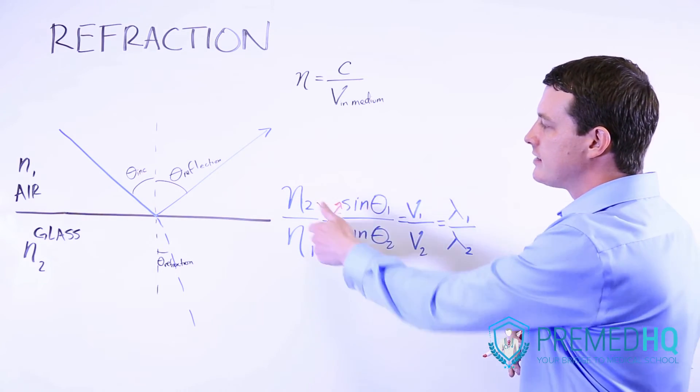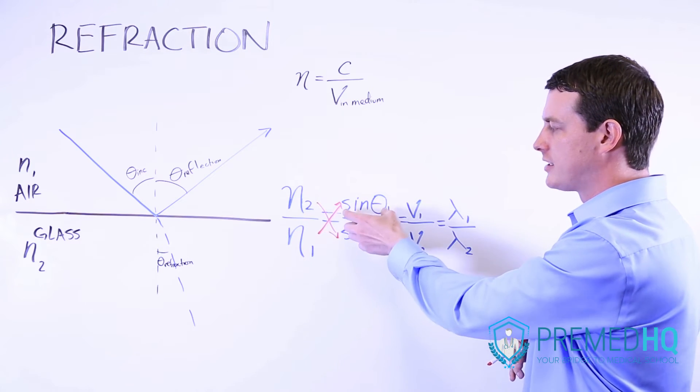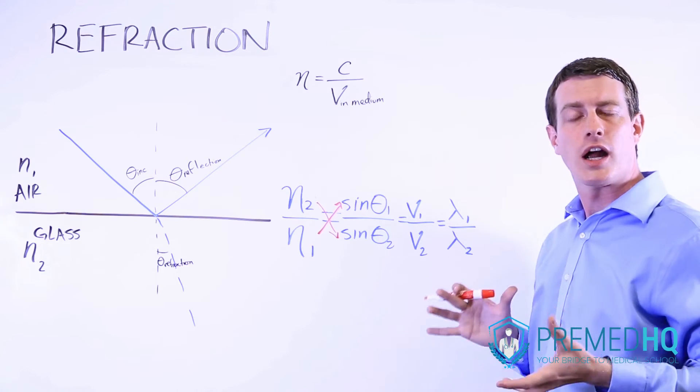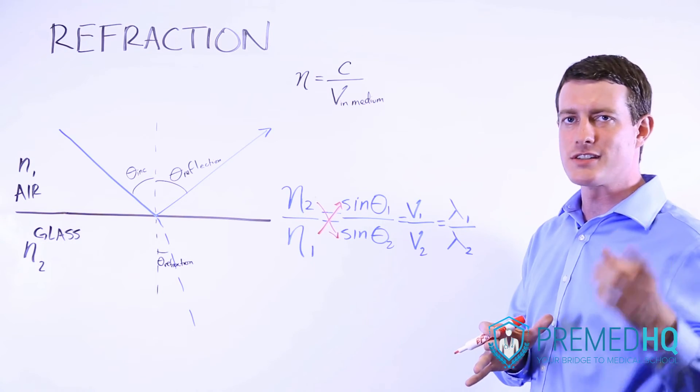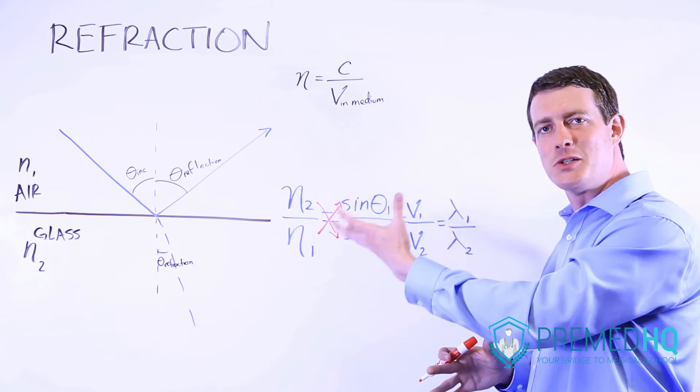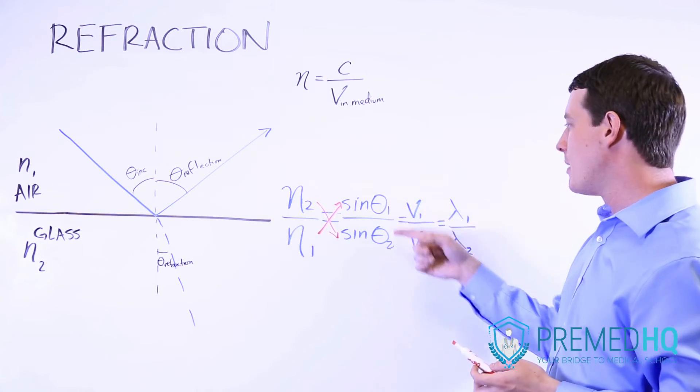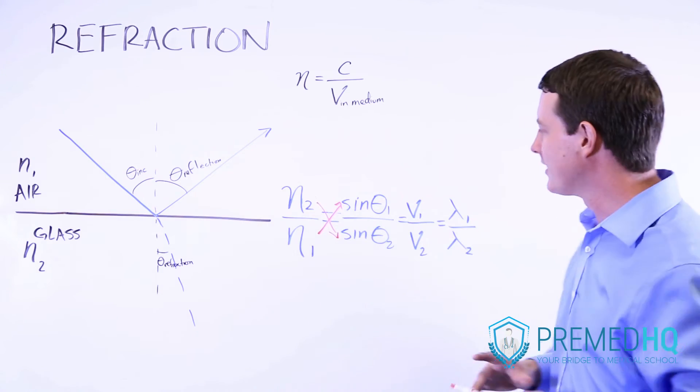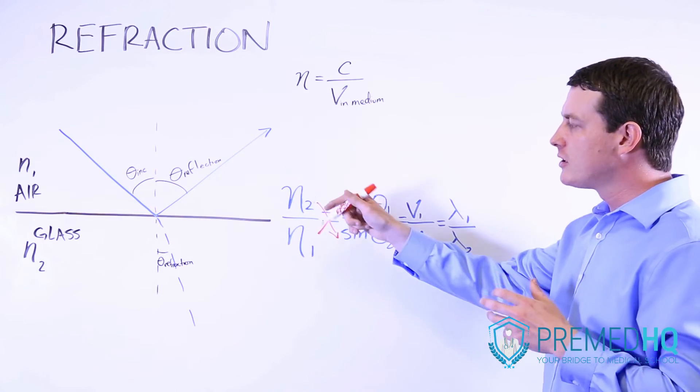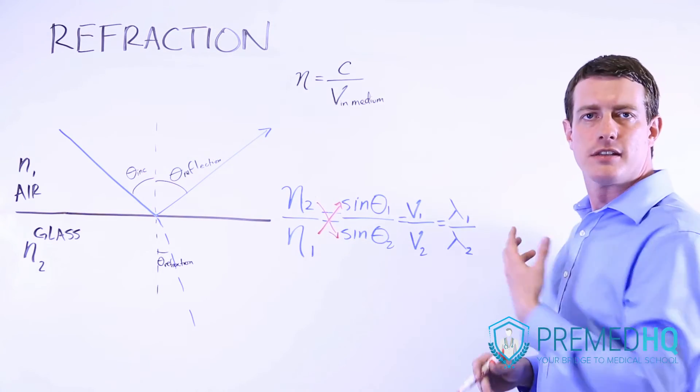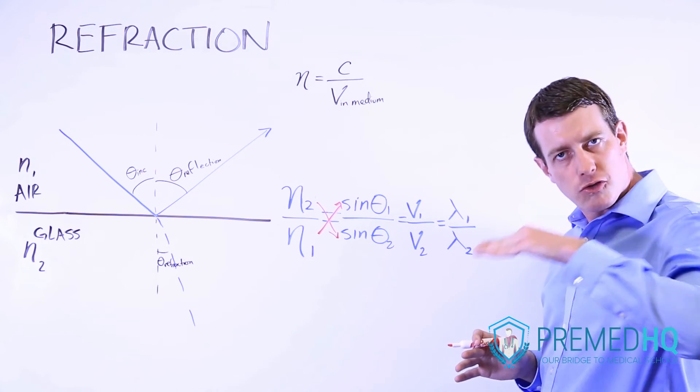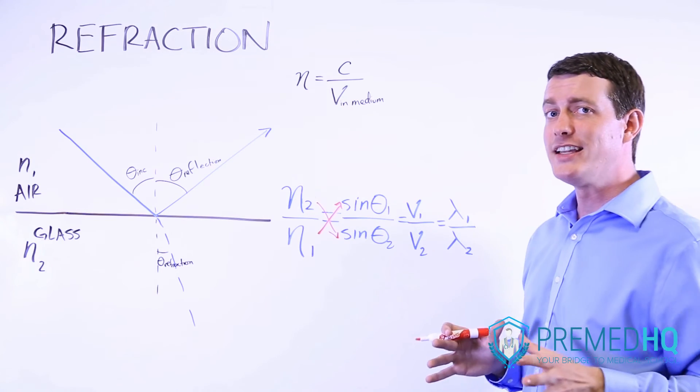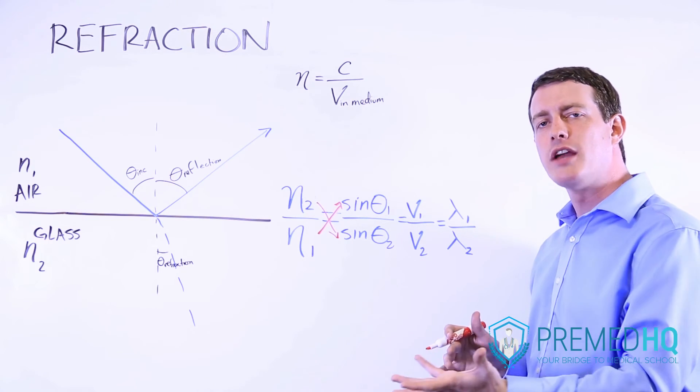So the indices are inversely proportional to sine theta 1 versus sine theta 2. That's described by Snell's law, which says N1 sine theta 1 equals N2 sine theta 2. And remember that these angles are whatever two angles you're analyzing here. They're also inversely proportional to the velocities of light traveling through that particular medium.